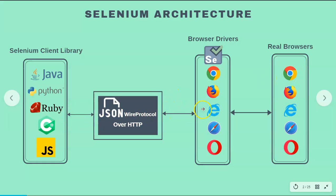These arrows are bi-directional. Once you run the script, it gets communicated through the JSON wire protocol to the Selenium WebDriver and the corresponding browser driver — in this case, Chrome. The Chrome driver in turn launches the browser and sends the script actions you have defined to the real browser. It performs those actions, and if successful, it responds back through the Chrome browser to the JSON wire protocol over HTTP to your IDE — in our case, Eclipse.